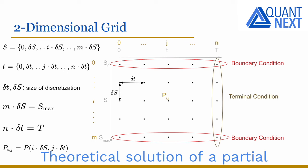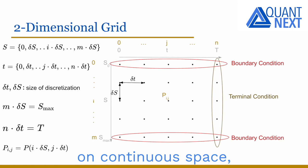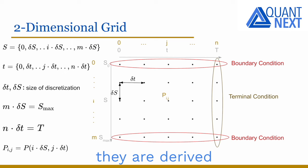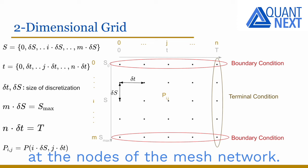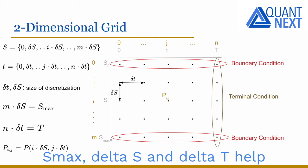Theoretical solutions of a partial differential equation are defined on continuous space, while the p_ij are approximation solutions derived from the discretization of the equation and are only defined at the nodes of the mesh network. S_max, delta s, and delta t help to control the discretization error.